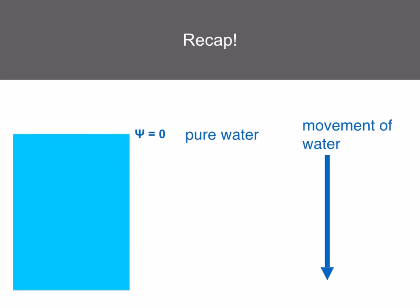Just to recap: pure water has a water potential of zero. Solute makes the water potential lower or more negative. So water always moves by osmosis from a higher water potential, which has a less negative value, to a lower water potential, which has a more negative value.